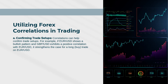Utilizing Forex correlations in trading. Confirming Trade Setups: Correlations can help confirm trade setups. For example, if EURUSD shows a bullish pattern and GBPUSD exhibits a positive correlation with EURUSD, it strengthens the case for a long (buy) trade on EURUSD.